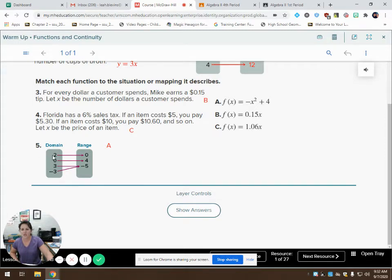And then last of all, our domain and range. If we plug in a 2, we get out a 0. We plug in 0, we get out 4. We plug in 3 or a negative 3, and we get out a negative 5. And that aligns with letter A.